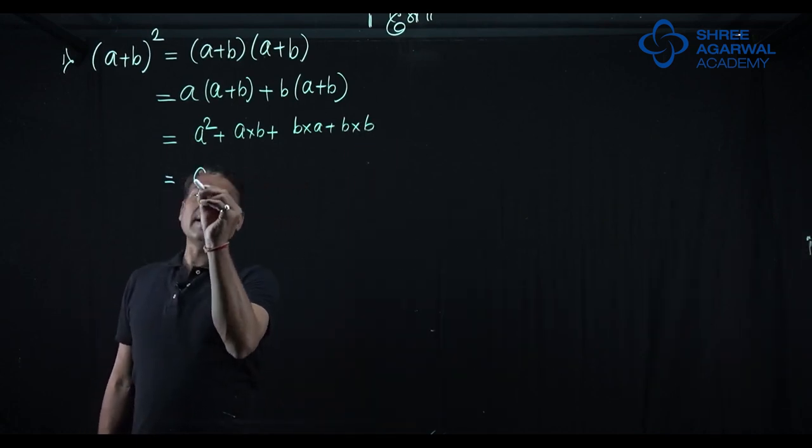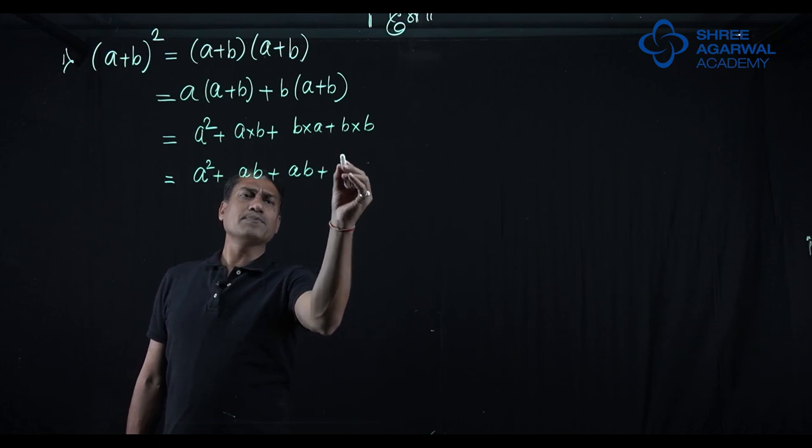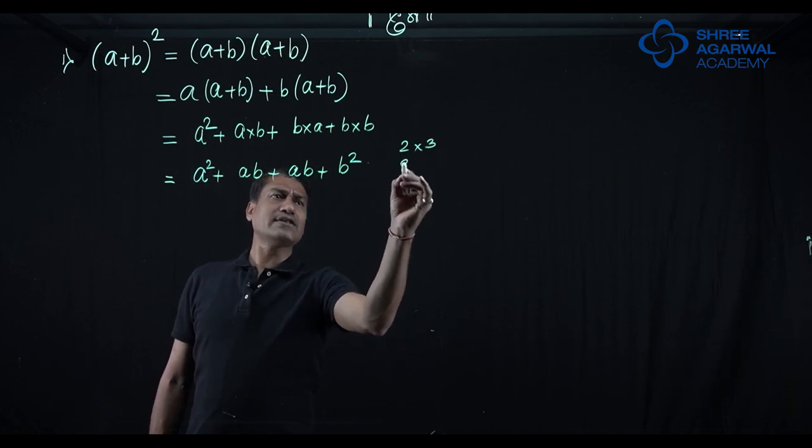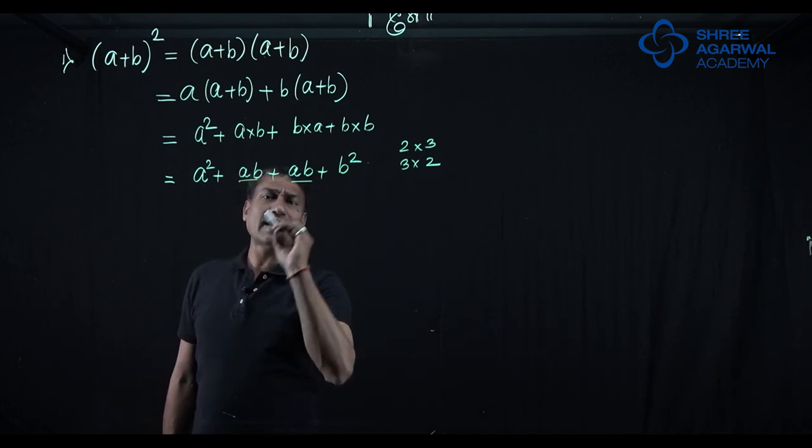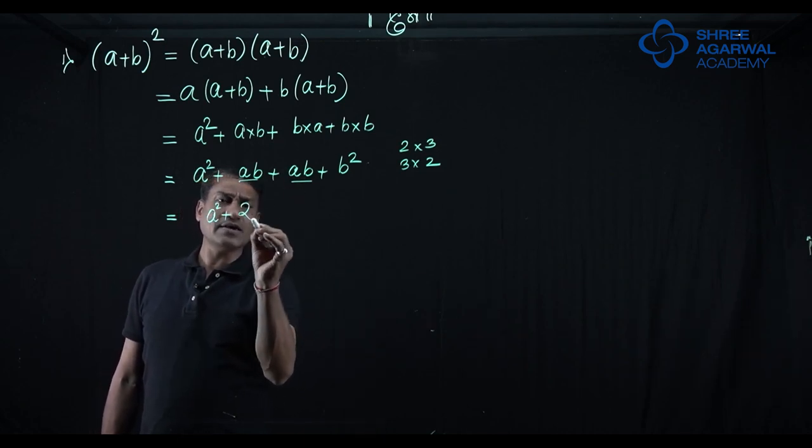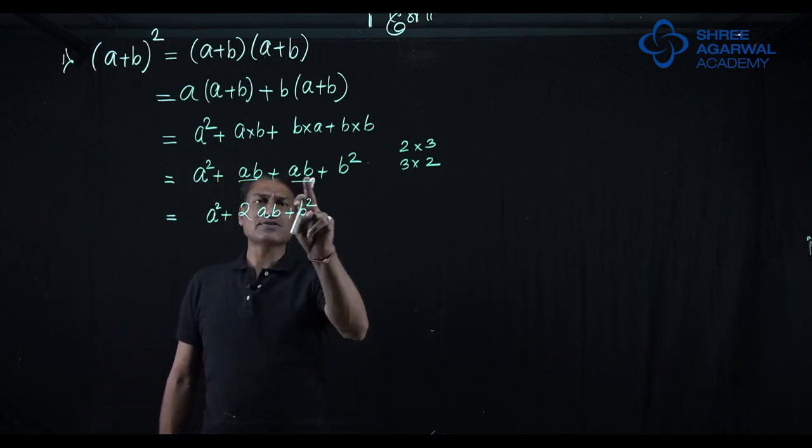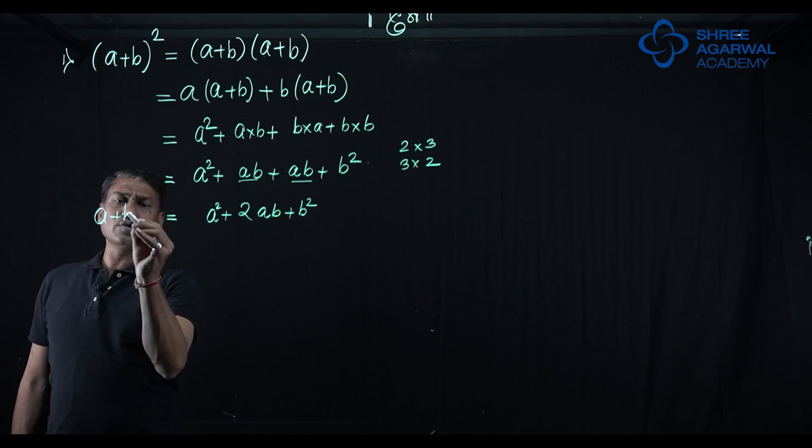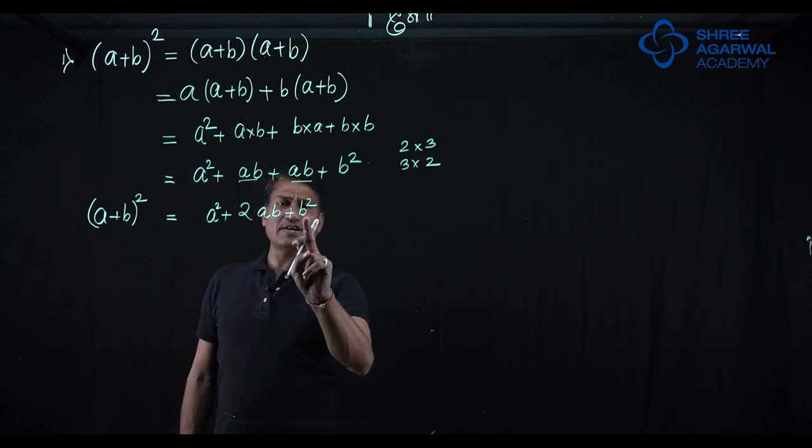Now we are going to open the brackets. So a into a is a square plus a into b, a into b plus b into a plus b into b. So this will be a square plus ab plus ab plus b square. See, ba and ab are the same like 2, 3s and 3, 2s are the same. So ab and ba are the same. Now these two are like terms. So a square ab plus ab plus ab, 2ab plus b square. One apple plus one apple is two apples.